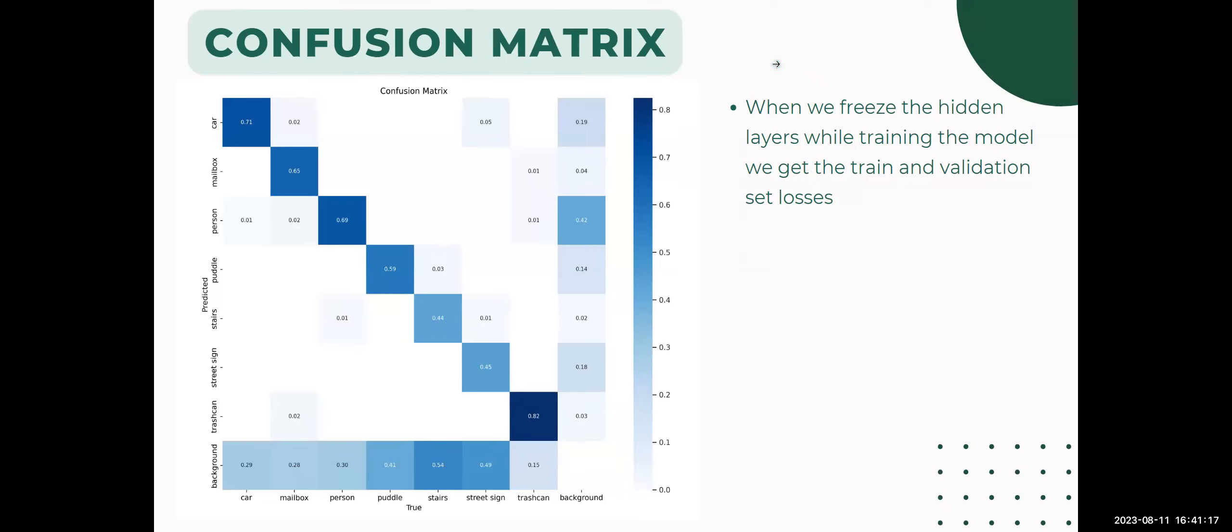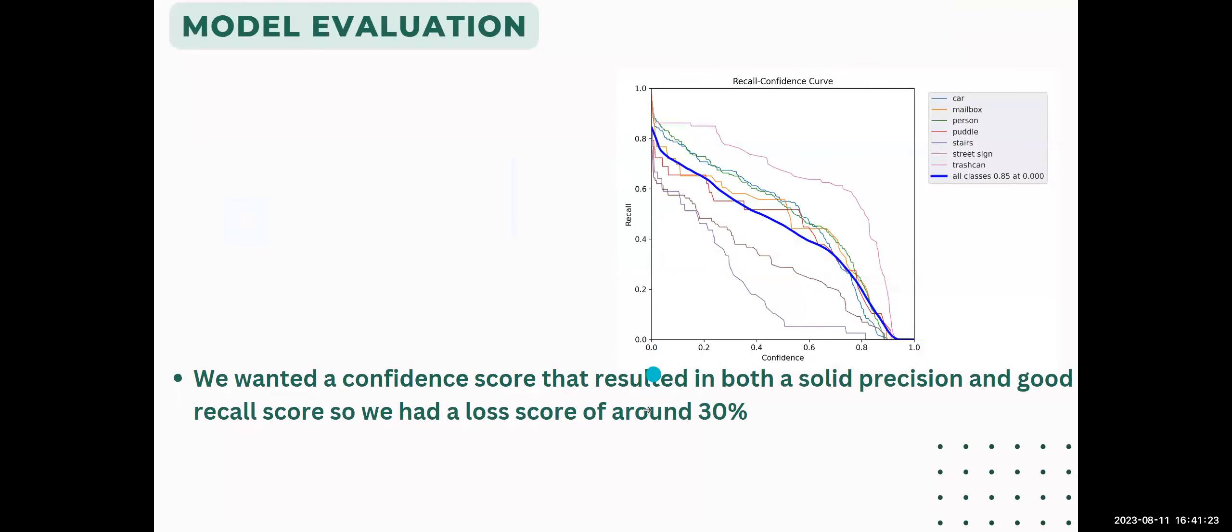When we froze the hidden layers while training the model, we got train and validate set losses. We wanted a confidence score that resulted in both solid precision and good recall score. We had a loss score of around 30%.